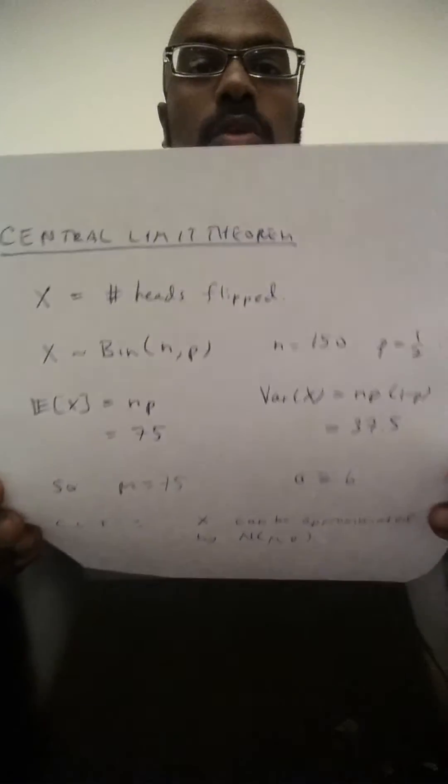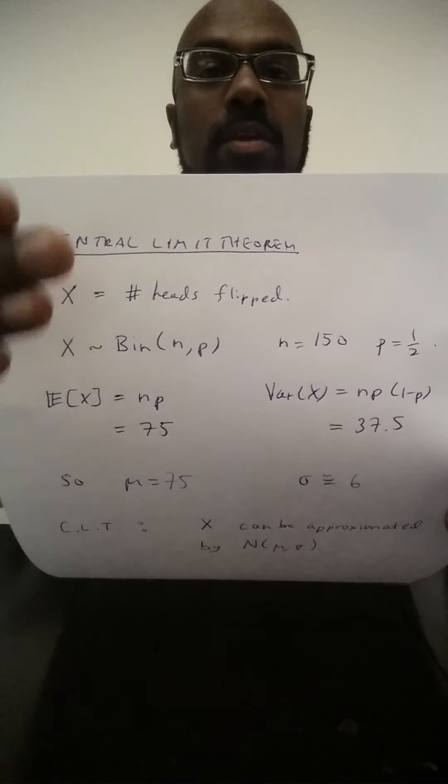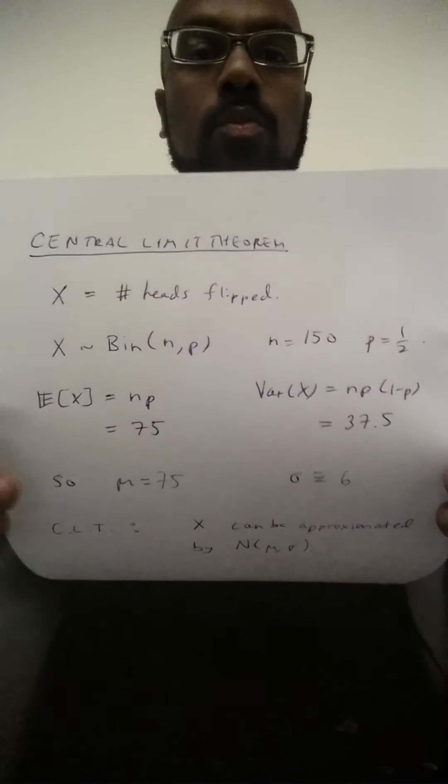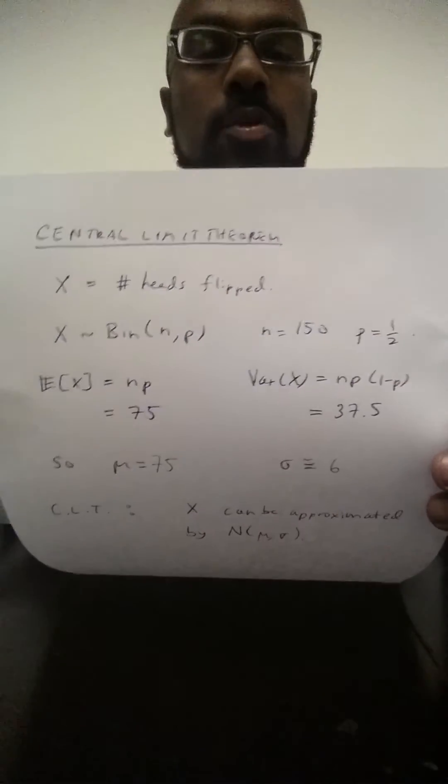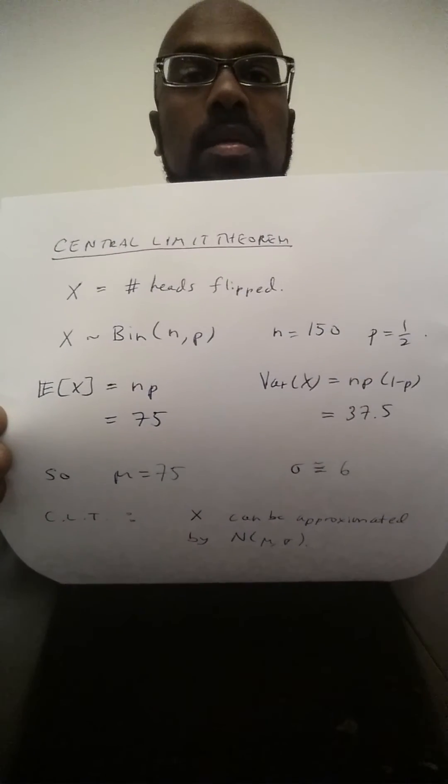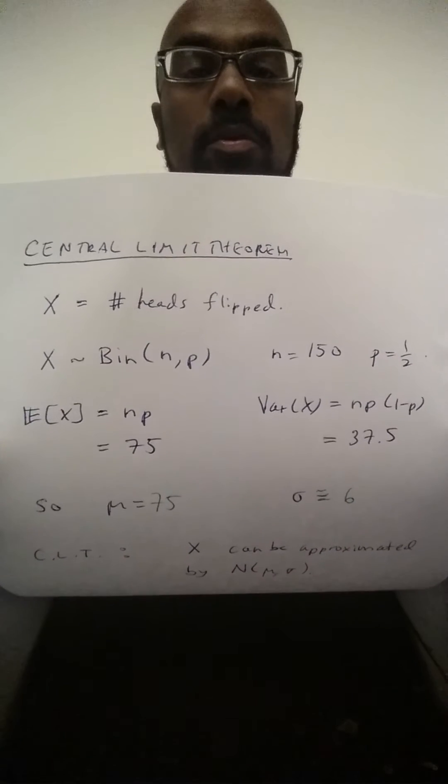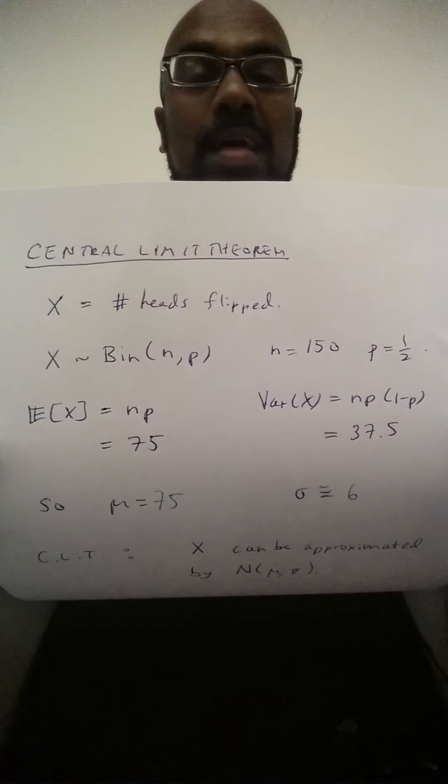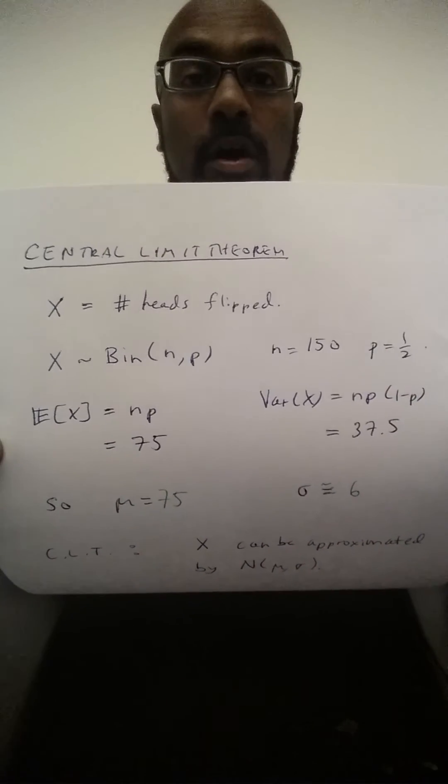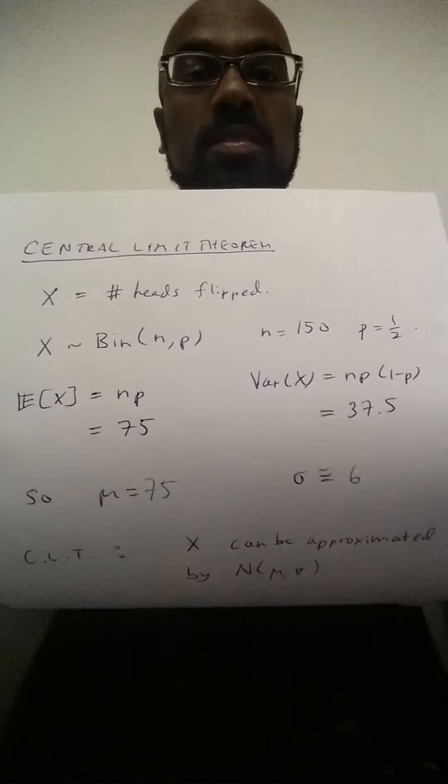Before I continue, one question you might have is, well, there are lots of different random variables besides the binomial one, right? Do I need to recognize every possible random variable and all of their expected values and variances? In my experience on the GRE math subject test, the binomial distribution tends to be the one that's asked about the most, by far, in terms of using the central limit theorem and the normal distribution to approximate it.